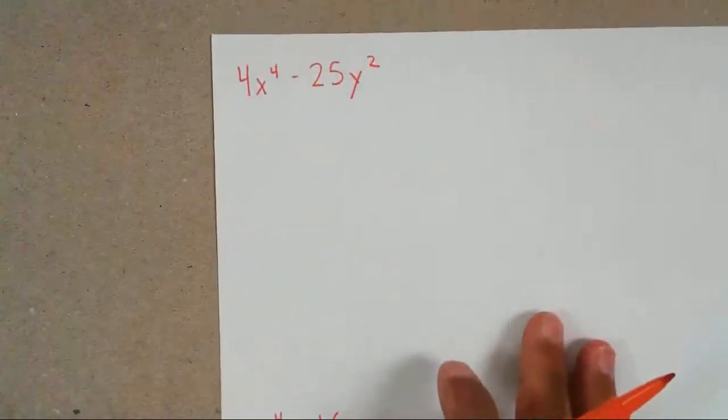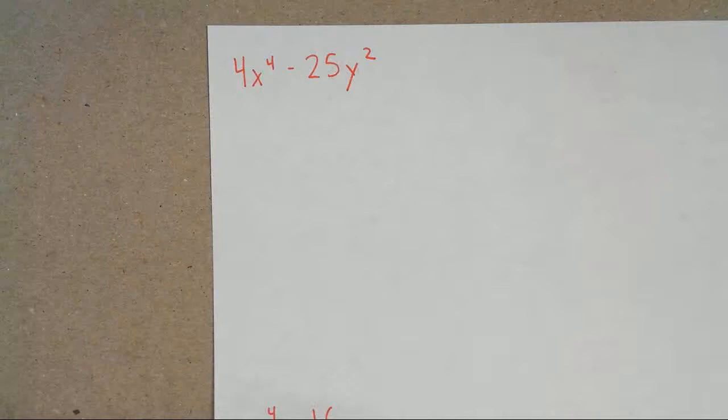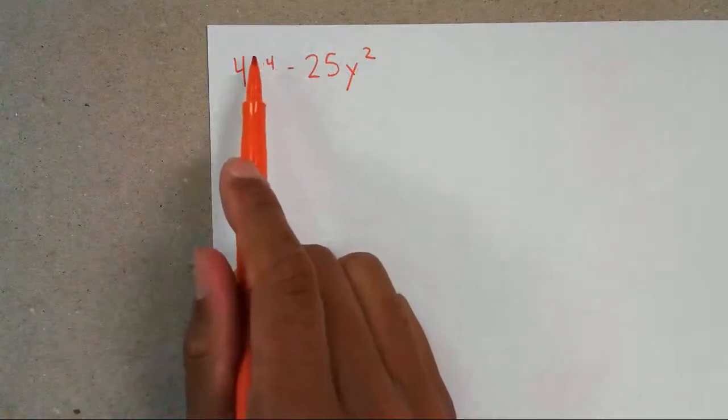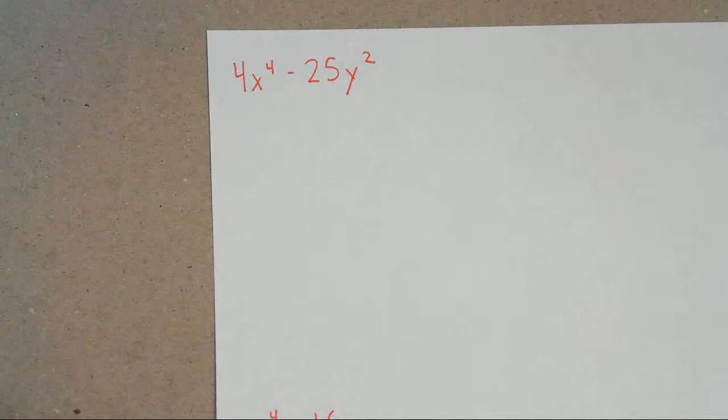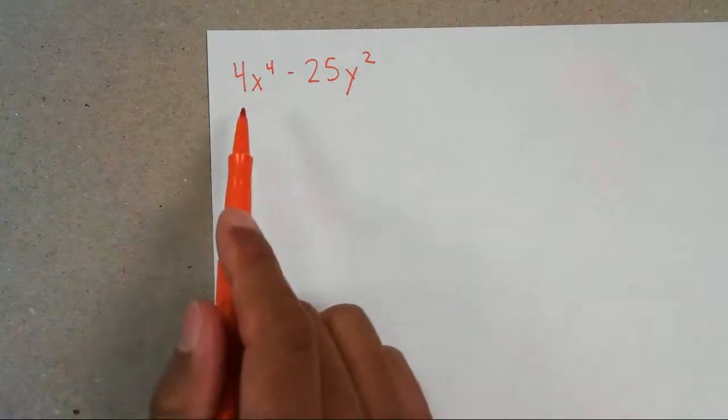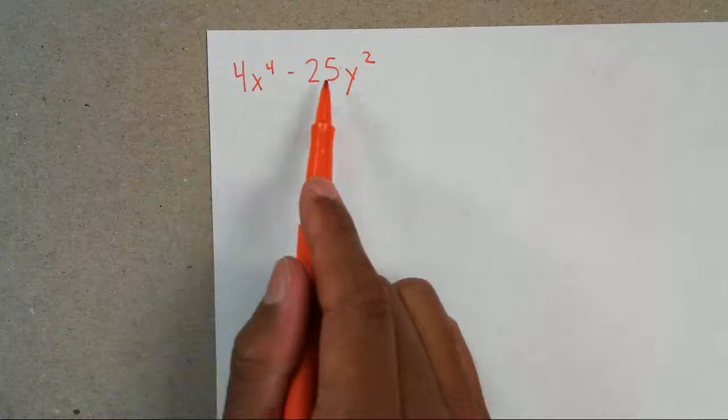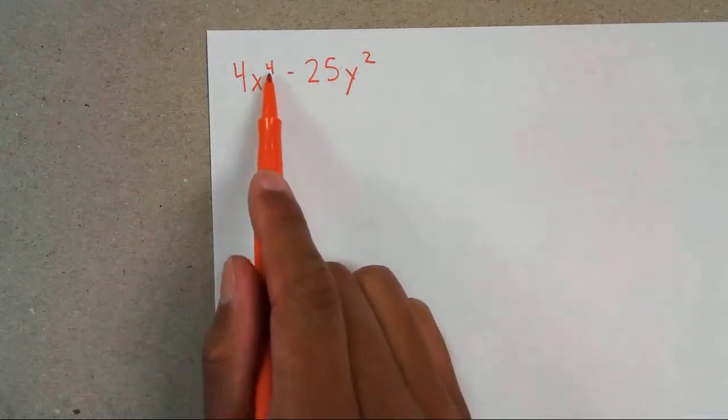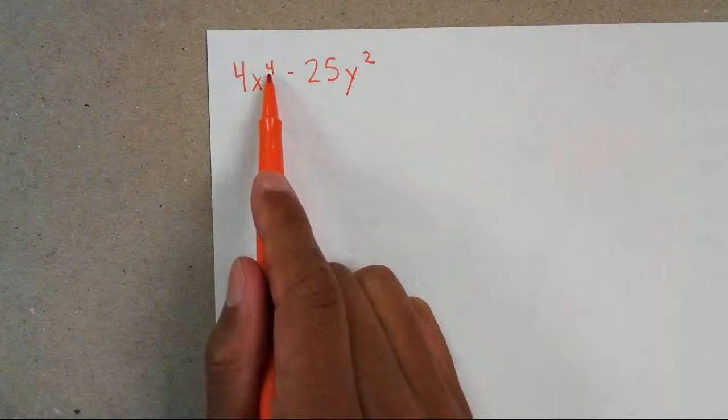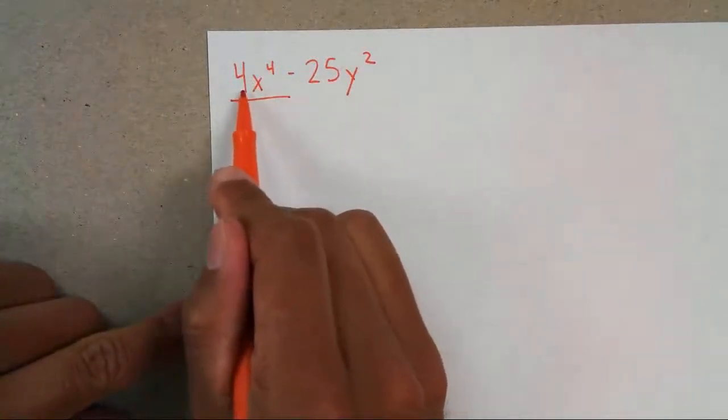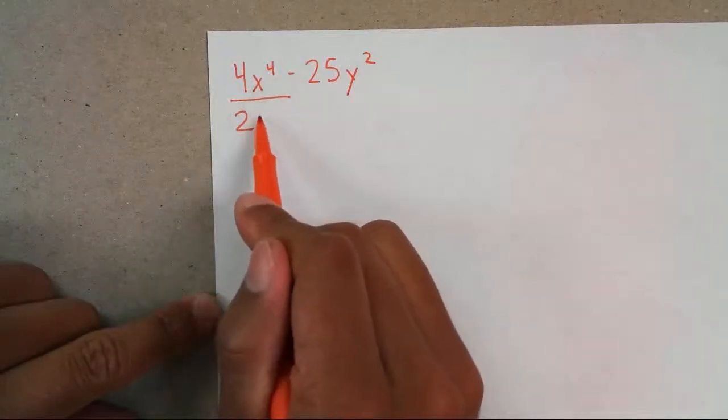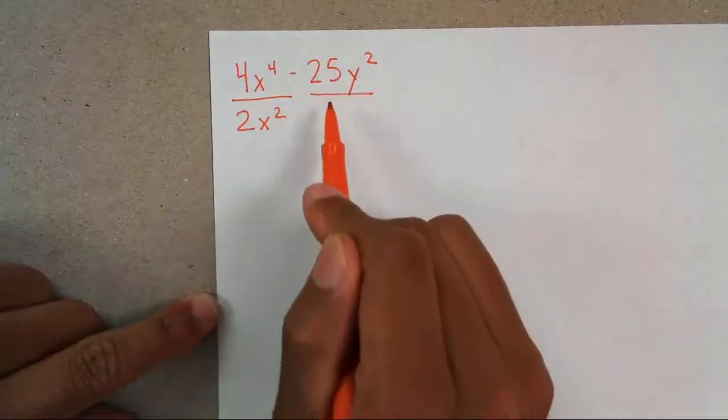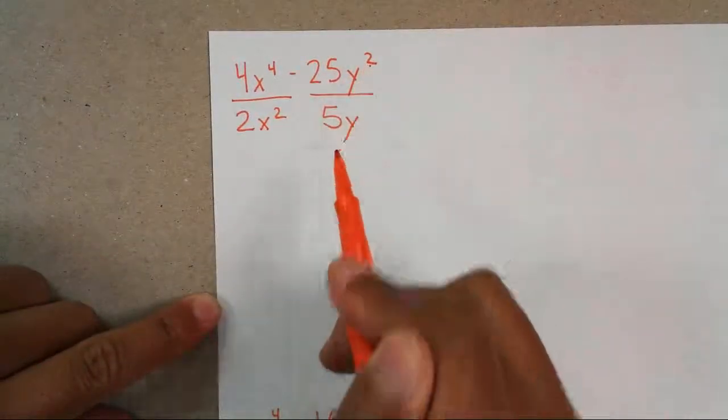You'll notice this is 4x to the 4th. This is a bigger number than 2. And this now has a y to the second. But don't let that discourage you. What you'll notice is there's two terms. I can't take out GCF. And what do you notice about 4 and 25? It's a perfect square. What about x? How do I know if this is a perfect square? Can you divide that 4 by 2? Yes. So the base of 4 would be 2. The base of x to the 4 divided by 2, that gives you 2, is x squared. What is the base of 25? 5. 5, divide that by 2, you get y.